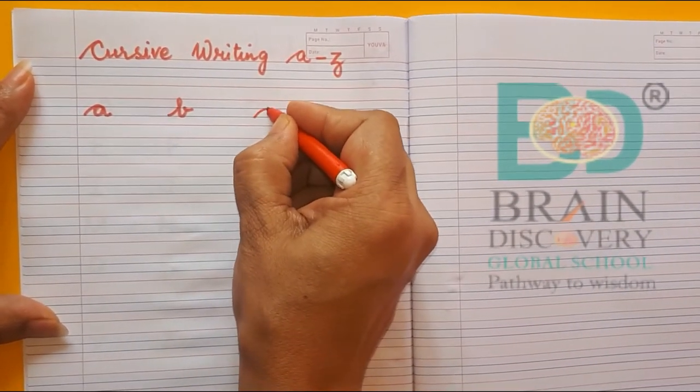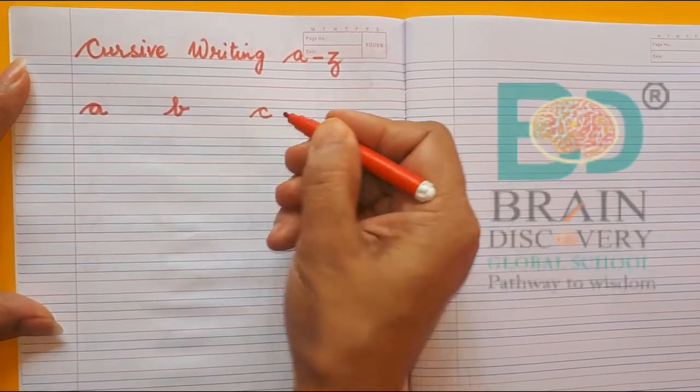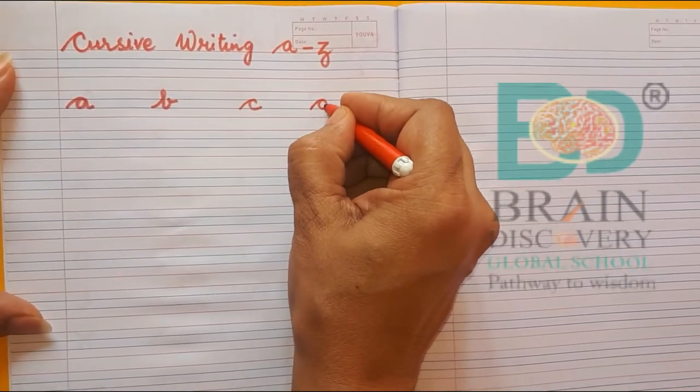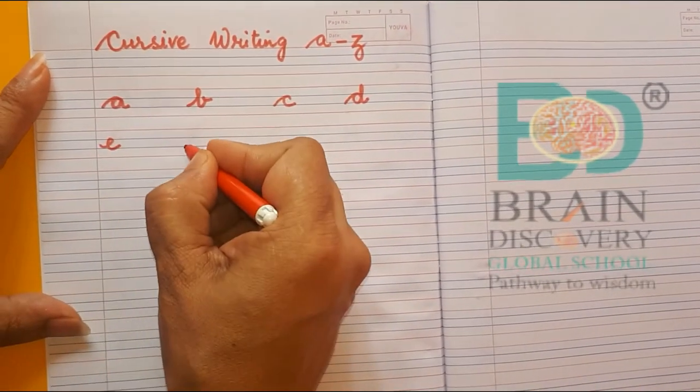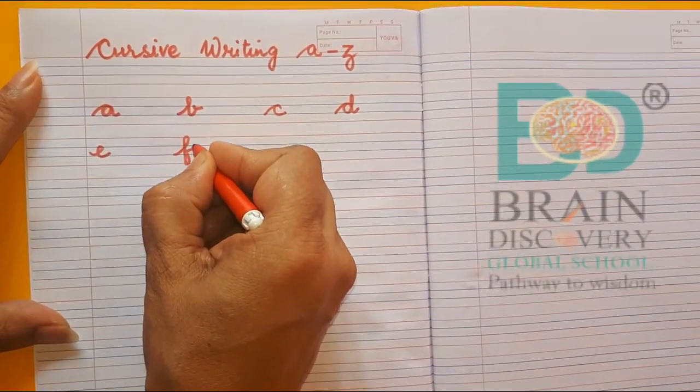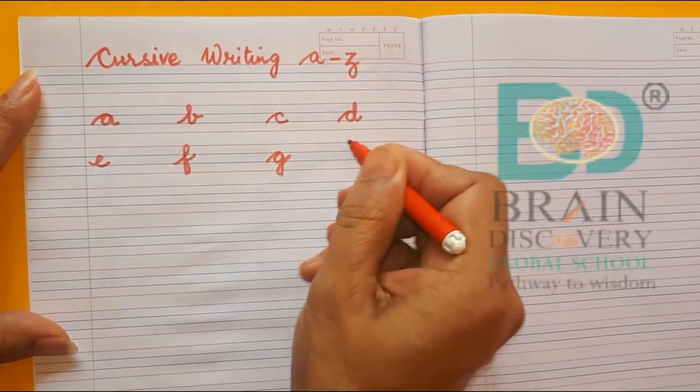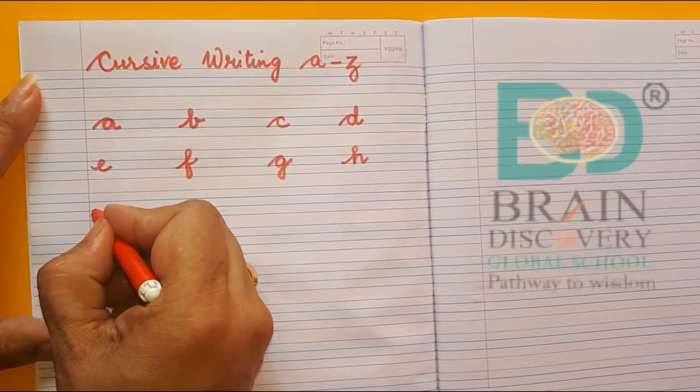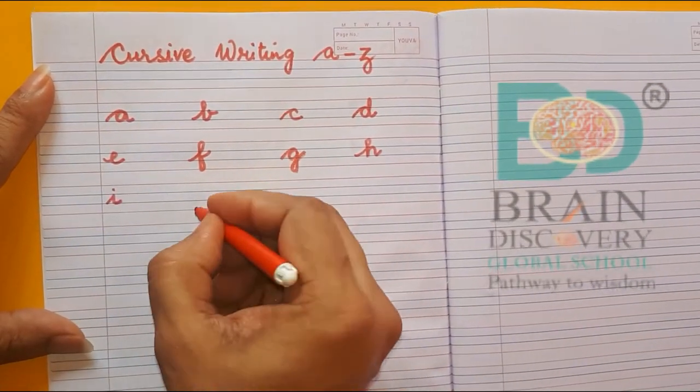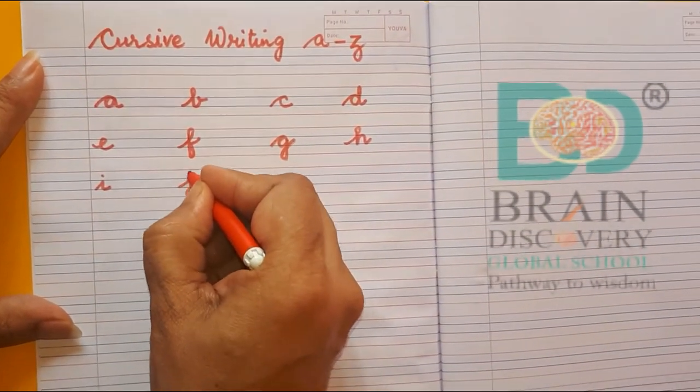Now c, this is the base word. And this one, this is d, e, f, g, h, i, j.